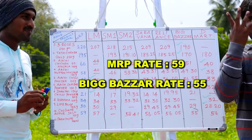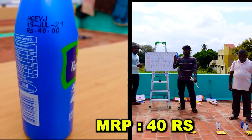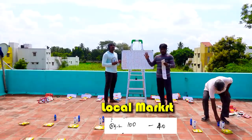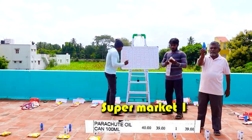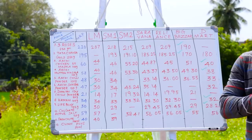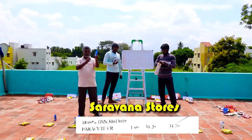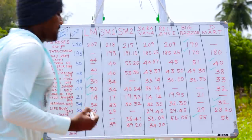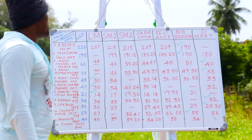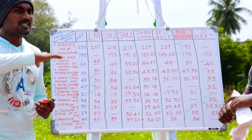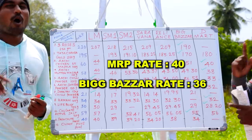Next, Paracetamol is 100 tablets. This MRP is 40. Local market is 40. Supermarket is 59. Supermarket is 39. Saravana Stores is 54. Reliance supermarket is 58. Big Bazaar is 54. D-Mart is 59. So this time the winner is Big Bazaar. The MRP price difference is 6 rupees.